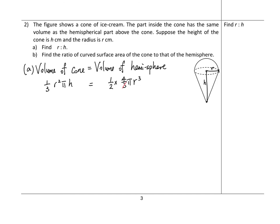Since both sides have 1/3, r², and π, you can cancel them all out. This gives h on the left-hand side and 2r on the right-hand side. The question asks for r to h, so rearranging gives r to h equals 1 to 2.